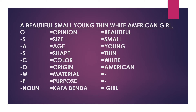Let's see: a small, beautiful, small, young, thin, white American girl. A is the article, opinion is beautiful, size is small, age is young, shape is thin, color is white, origin is American. The noun — kata benda — is the girl.